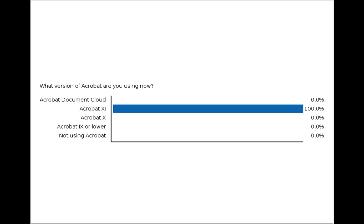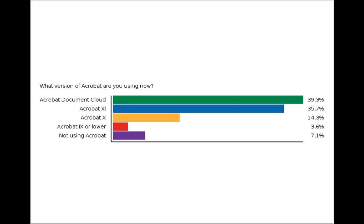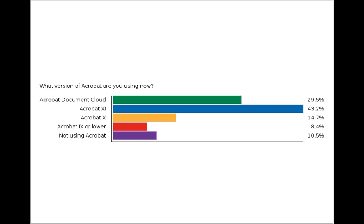We want to know what you are currently using Adobe Acrobat for. We want to know if you are using the Document Cloud or DC version, Acrobat 11, version 10, version 9 or lower, or perhaps you are not using it at all and are considering trying Acrobat. This poll helps us get an idea of where you are with this product — whether you already have experience using it or if you are coming to it brand new.